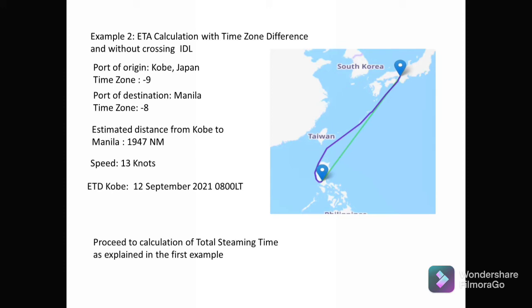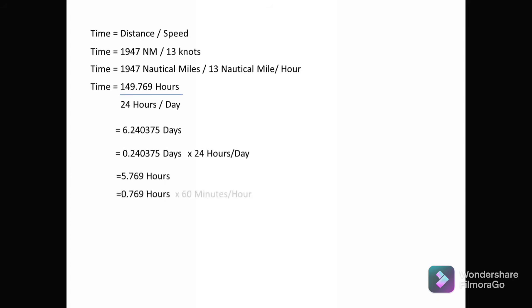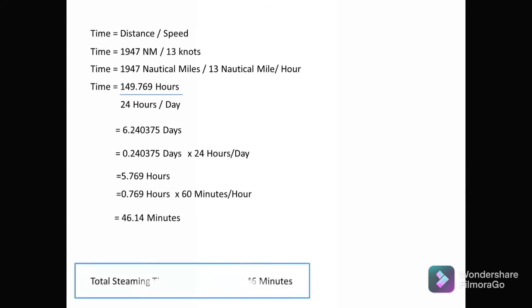We proceed with the calculation of total steaming time as explained in the first example. Time = 1,947 nautical miles ÷ 13 knots = 149.769 hours. Speeding through the conversion steps already explained, the total steaming time from Kobe, Japan to Manila is 6 days, 5 hours, and 46 minutes.